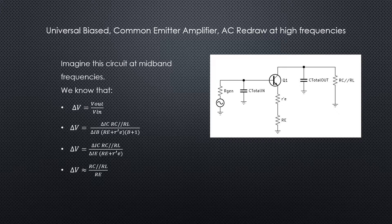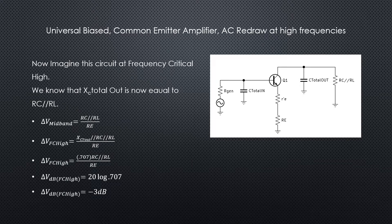So we can then say that delta V is approximately equal to rc in parallel with rl divided by re. That gives us the gain at midband frequencies.